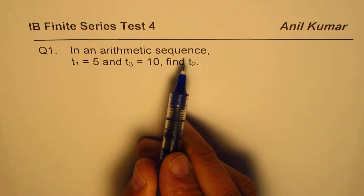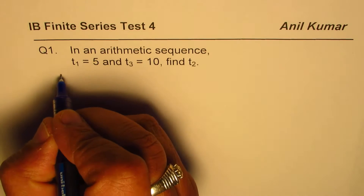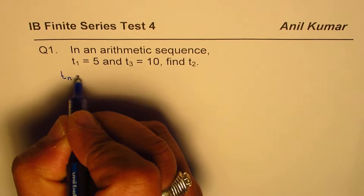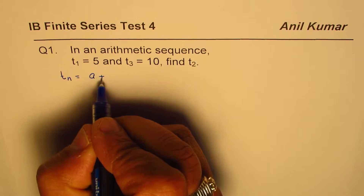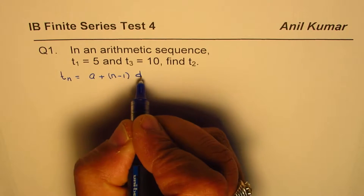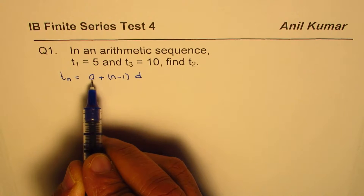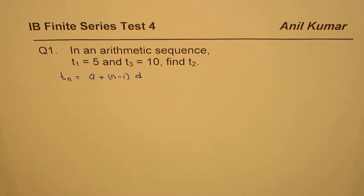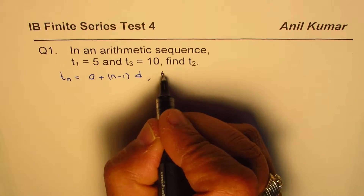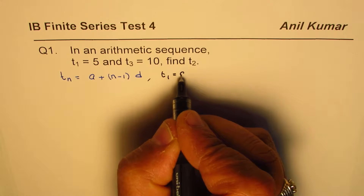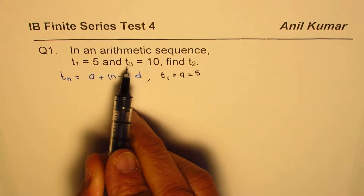There are many ways to do this, but we'll follow a standard method — beginning with the general formula. The nth term for an arithmetic sequence is a + (n-1)·d, where n is the term number, a is the first term, and d is the common difference. In our case we are given t1, which is the first term, equal to 5.